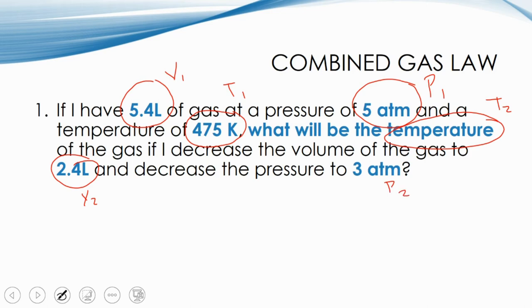So using our combined gas law, we're going to put in all of the information into the equation. So we would start with our pressure, our initial pressure, which is 5 atmospheres, and our initial volume, which is 5.4 liters. Divide that by temperature. And again, I repeat this because it happens many, many times and too often that students forget to ensure that the units are the correct ones. So always, always be on the lookout for that.